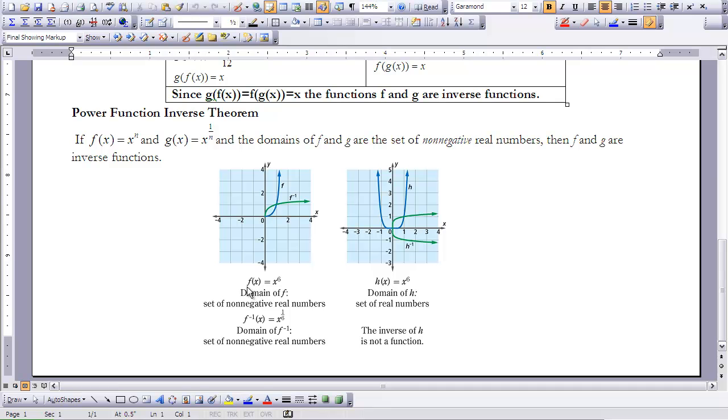So if I look at the function f(x) = x^6, we know that we've defined it as the set of non-negative real numbers. So we know that our value is just going to be the right-hand side of this parabola, or this curve here. And we know that the inverses of each other are the reflections over the line y = x.